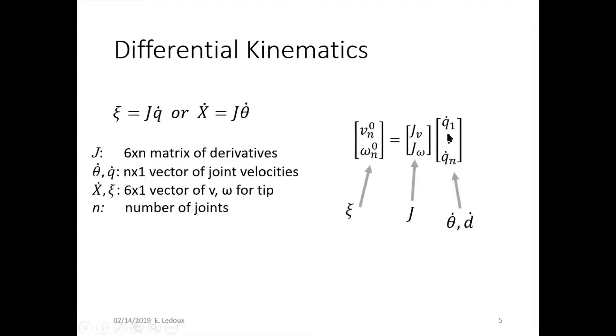This q matrix has n elements, and it's a column vector. It has one element for each joint. And then xi is always a six by one. So that means the Jacobian is going to be six by n.